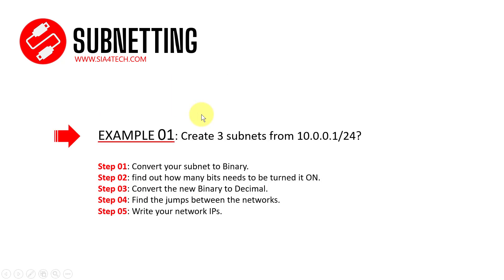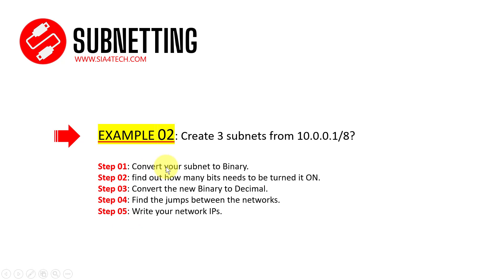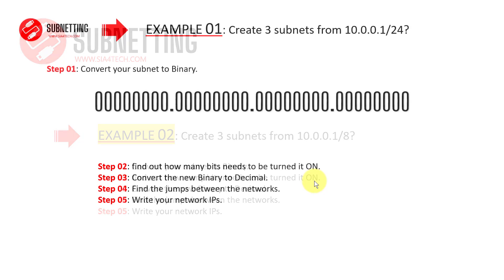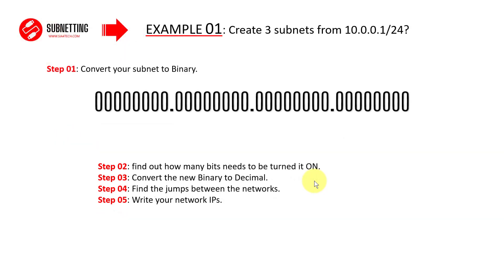In today's video we have two examples. The first one: create three subnets for an IP with subnet mask /24. The second one uses the same IP address but a different subnet mask, and also asks to create three subnets. To answer these questions we have five easy steps. The first step is to convert your subnet mask to binary, and then find how many bits you need to turn on.